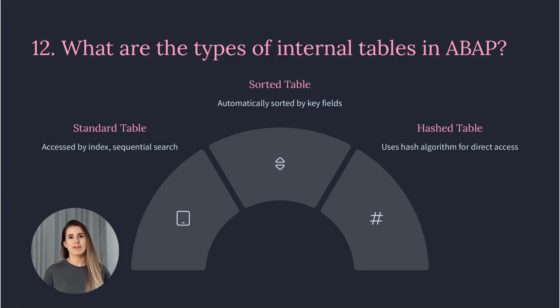Twelve: What are the types of internal tables in ABAP? Standard table, sorted table, and hash table.